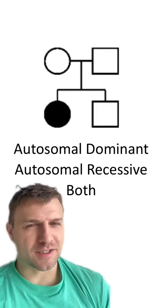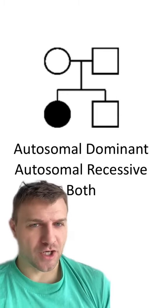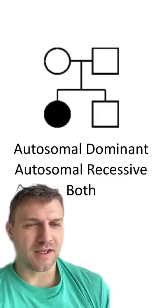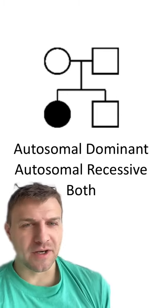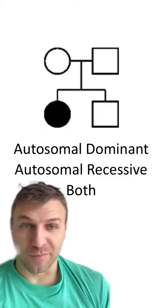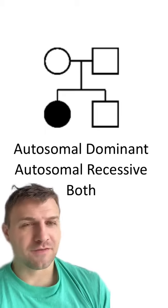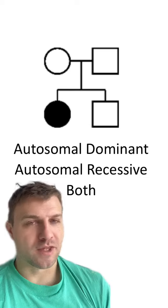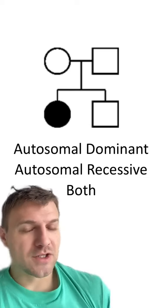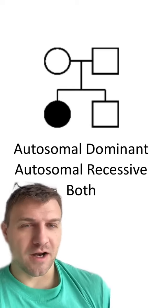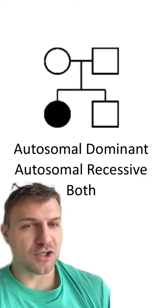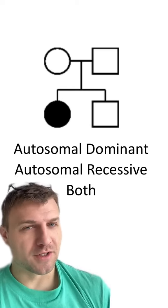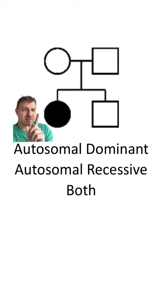Can you tell what type of inheritance pattern this pedigree is showing? It can be either autosomal dominant or recessive, or both. In this family, the daughter is going to be the only one that's affected. So this type of inheritance pattern has to just be autosomal recessive.